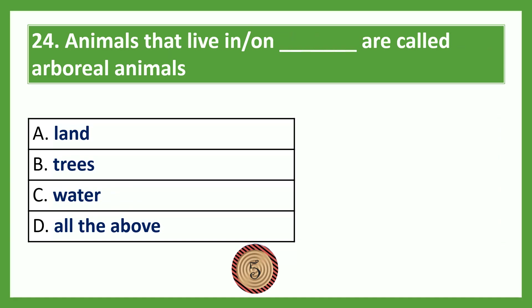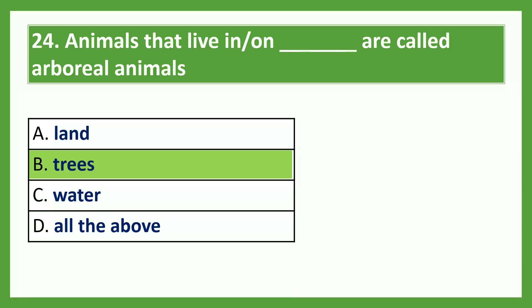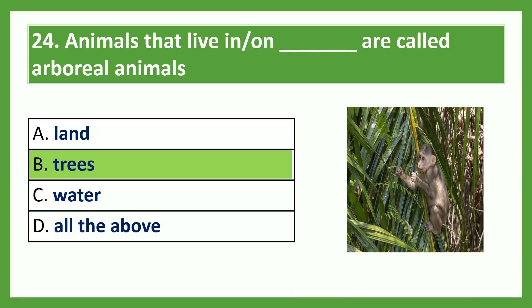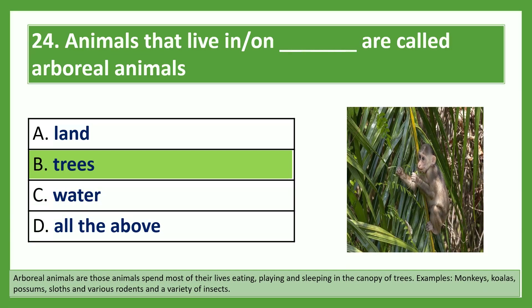Animals that live in or on dash are called arboreal animals. Option A: land; Option B: trees; Option C: water; Option D: all of the above. The answer is Option B, trees. Arboreal animals are those that spend most of their lives eating, playing and sleeping in the canopy of trees. Examples are monkeys, koalas, possums, sloths and various rodents and a variety of insects.